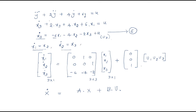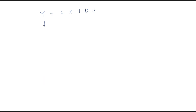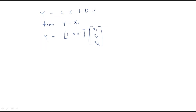For the output equation y = Cx + Du: from equation 1, y = x1 only, so matrix C is [1, 0, 0] — a 1×3 row vector. There is no direct transmission term, so the D matrix is zero — no transition matrix. The state model is now complete.